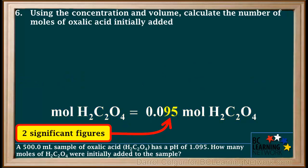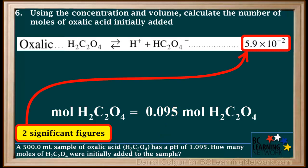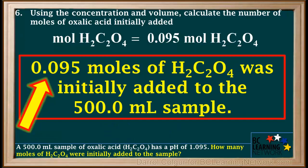This final answer is rounded to two significant figures, because the Ka value obtained from the acid table was only two significant figures — the lowest number of significant figures in the data used. So to summarize, the final answer is 0.095 moles of oxalic acid H2C2O4 was initially added to the 500 mL sample.